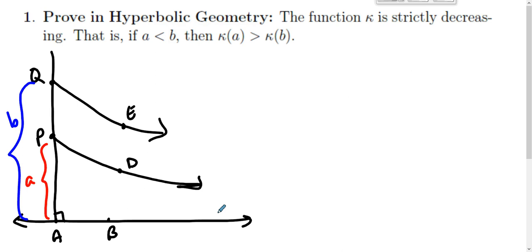So the claim is that kappa of a has to be bigger than kappa of b. We already know from previous work that the kappa function is non-increasing, so we know that it is at least true that kappa of a is greater than or equal to kappa of b.